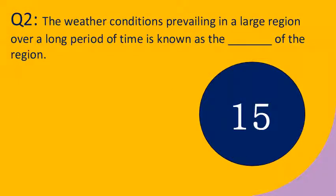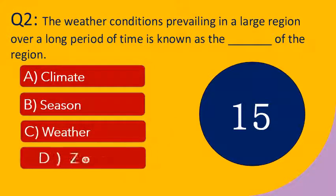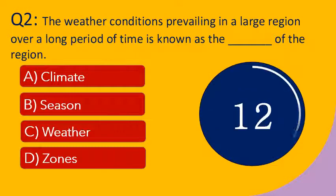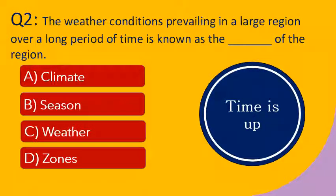Question number 2: The weather conditions prevailing in a large region over a long period of time is known as the dash of the region. Options are A. Climate, B. Season, C. Weather, and D. Zones. Your time starts now. Your time is up. The right answer is climate. The weather conditions prevailing in a large region over a long period of time is known as the climate of the region.